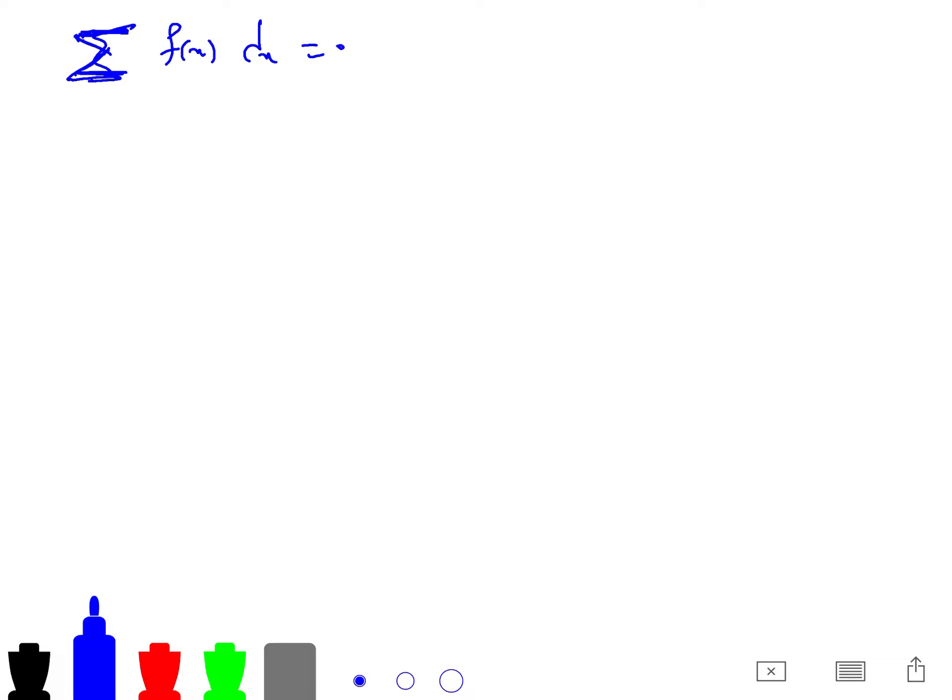So if you plug that function that I described into the Rayleigh quotient, it becomes sum of (f(u) - f(v))^2 multiplied by w(u,v), because our graph is weighted in general, and divided by sum of f(v)^2 dv.